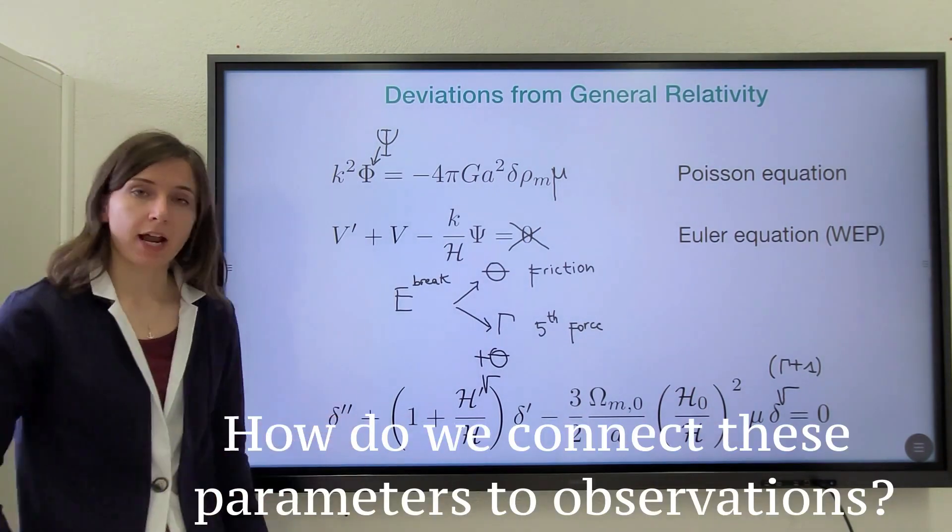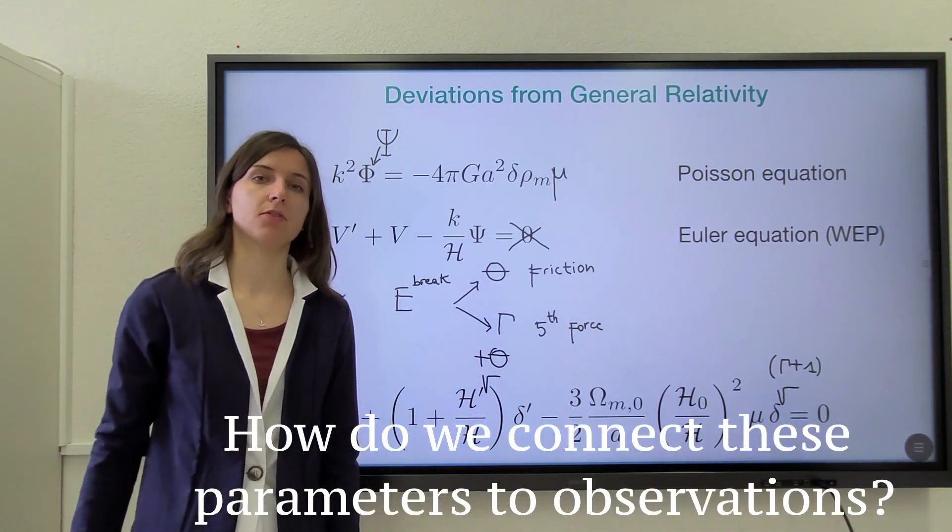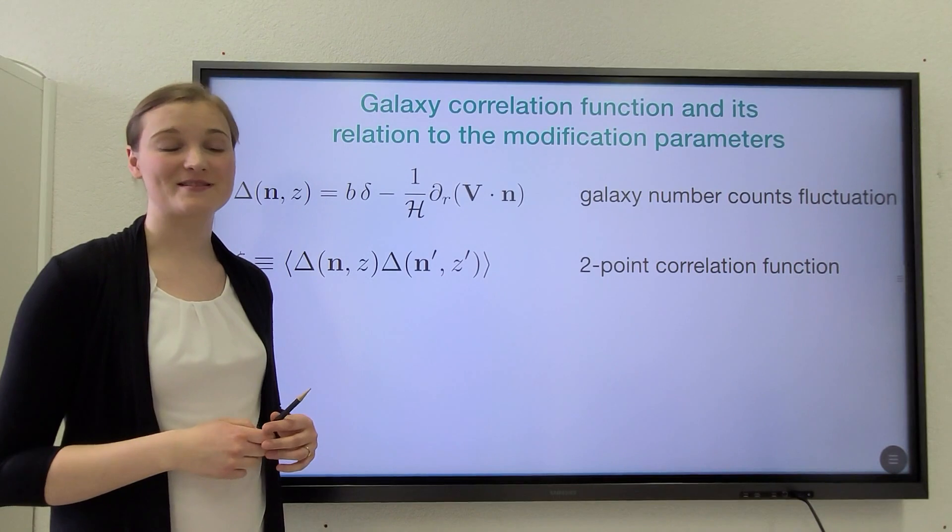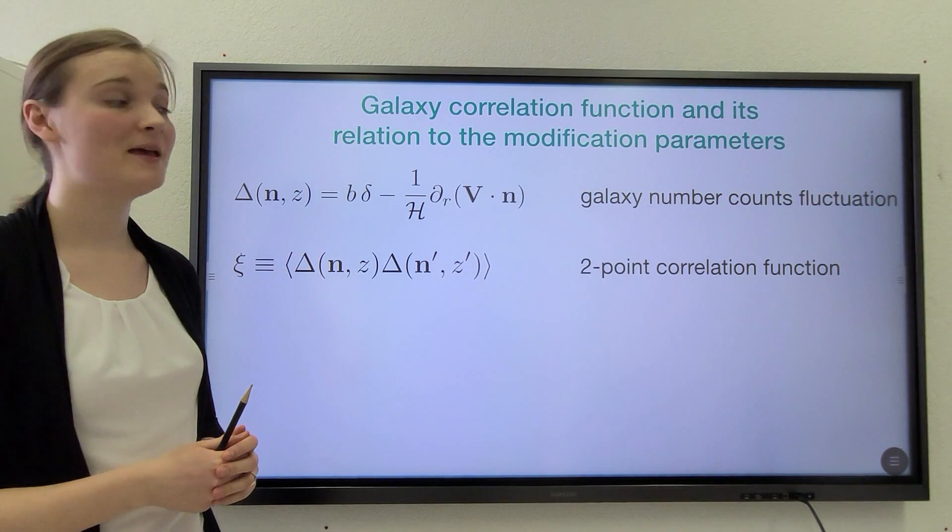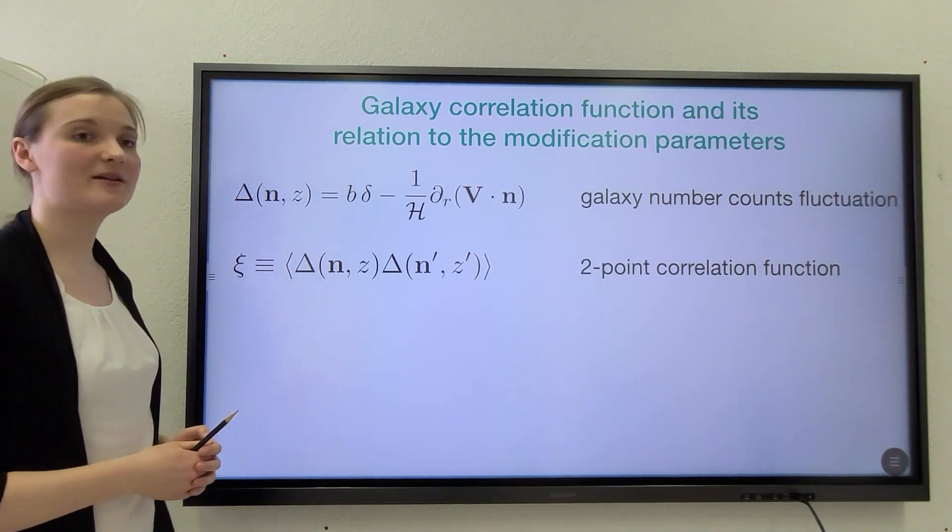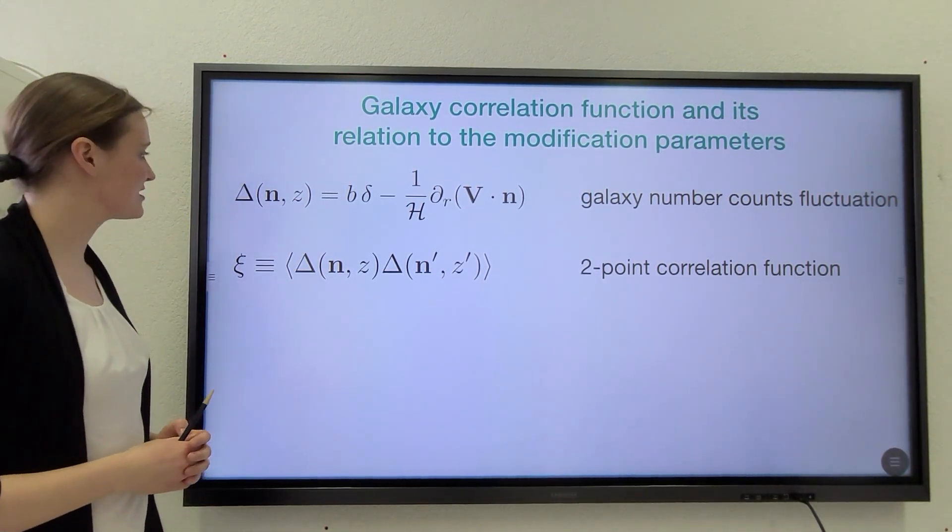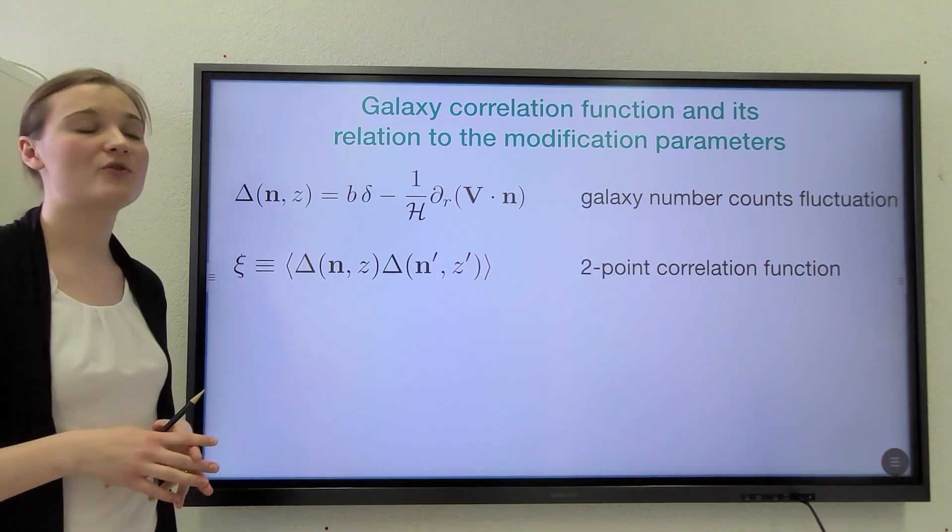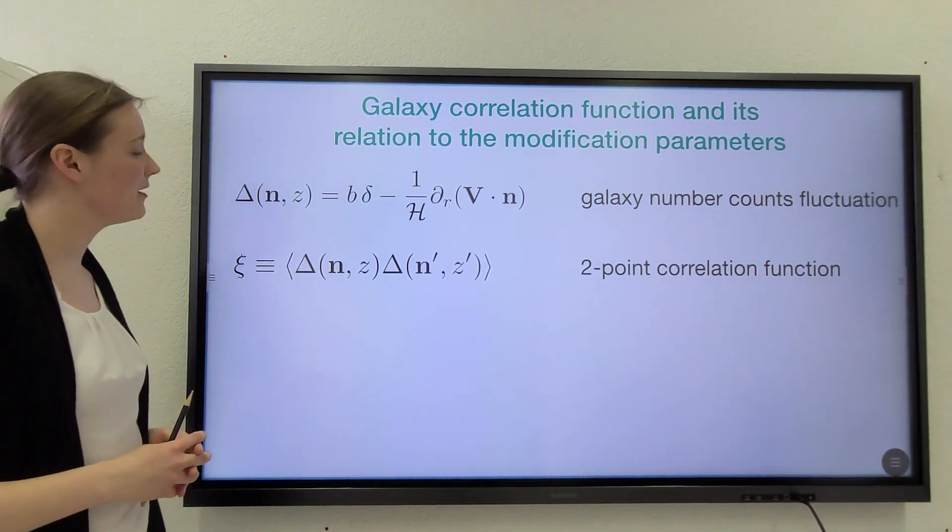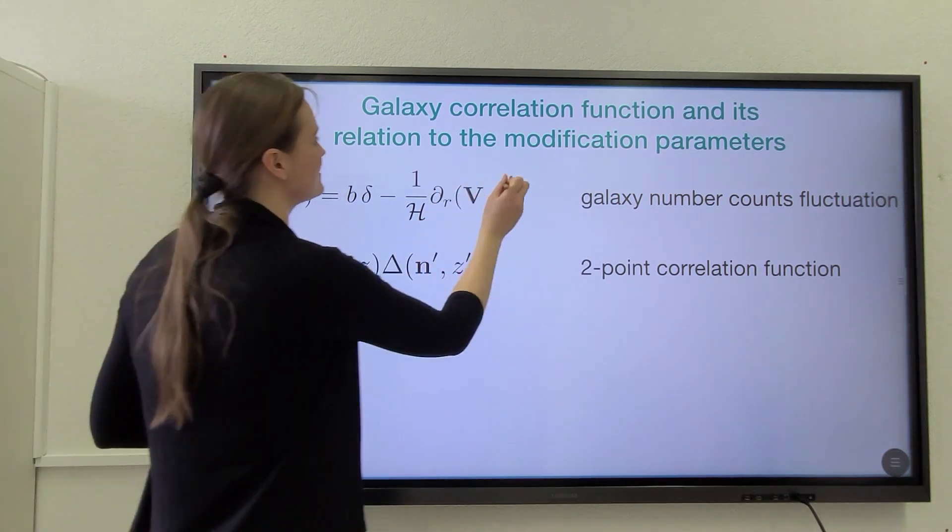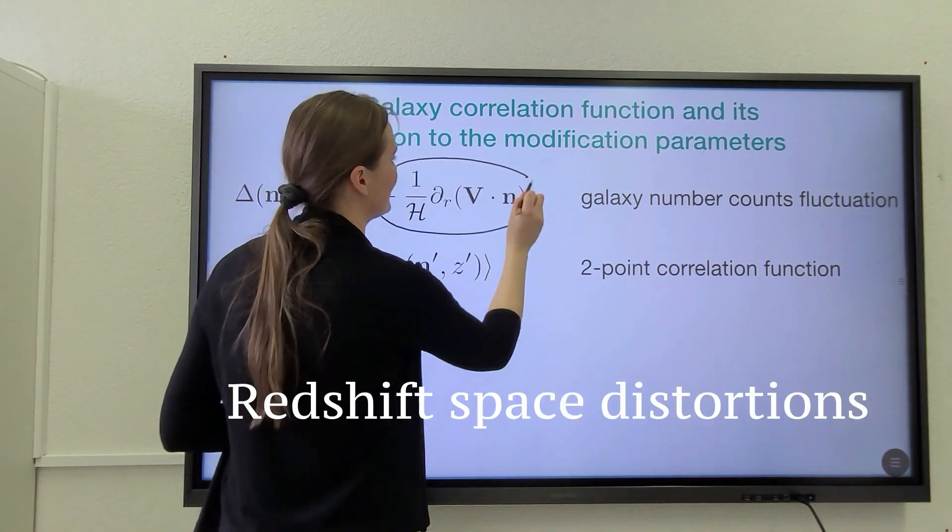So how do we connect these parameters to observations? For that purpose, we can use observations of the galaxy number k fluctuation. It consists out of two dominant terms. The first one connects it to the matter density fluctuation by the galaxy bias B, whereas the second term is the very well-known redshift space distortion term.